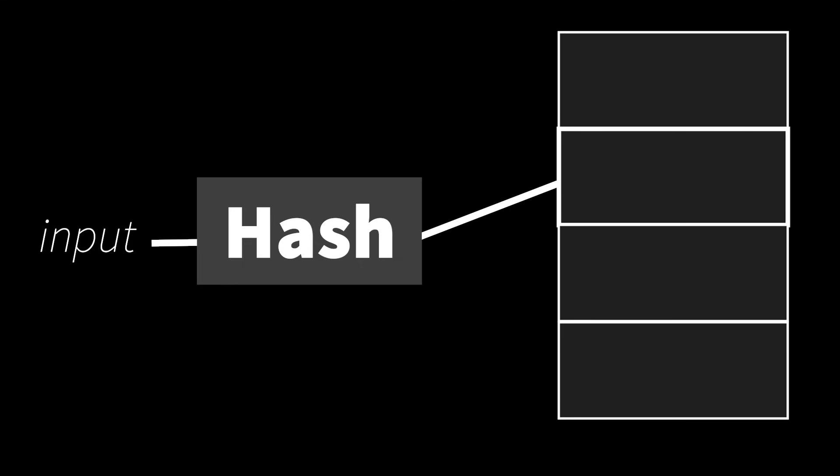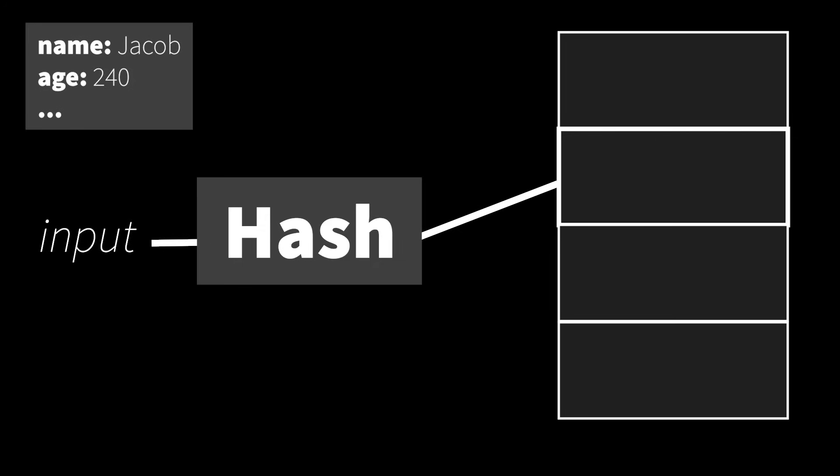Say we want to store records of people in our table — their name, age, weight, and so on — and we want to look up people by their names. Then our hash function is going to take a name, a string of characters, and map that to an integer, which will be an index in our hash table. There are a lot of different hash functions out there with different strengths and weaknesses. The first thing to keep in mind: calling the hash function on the same input should always produce the same output. If it doesn't, our hash table won't work.